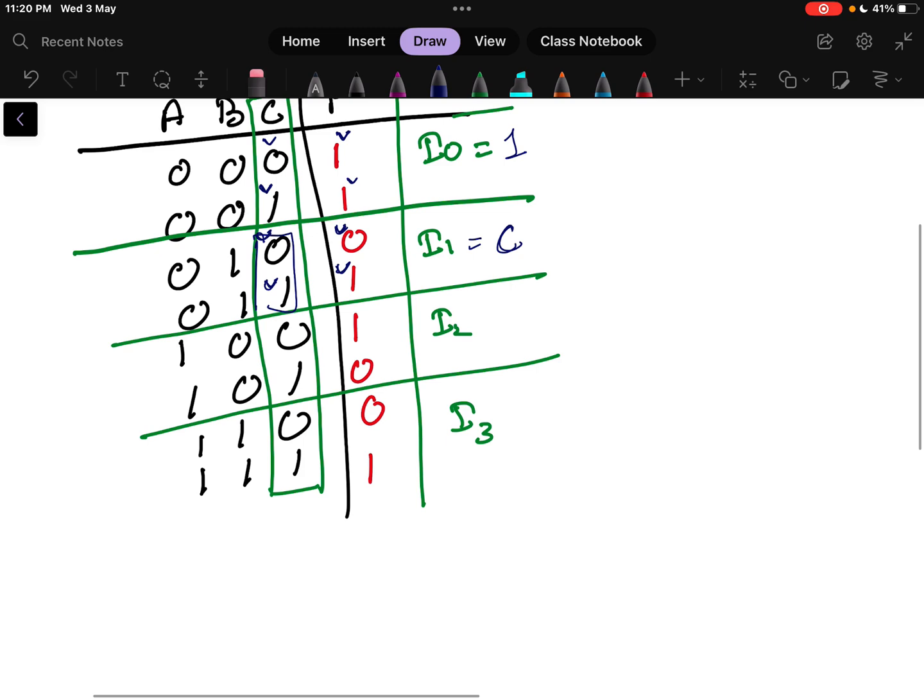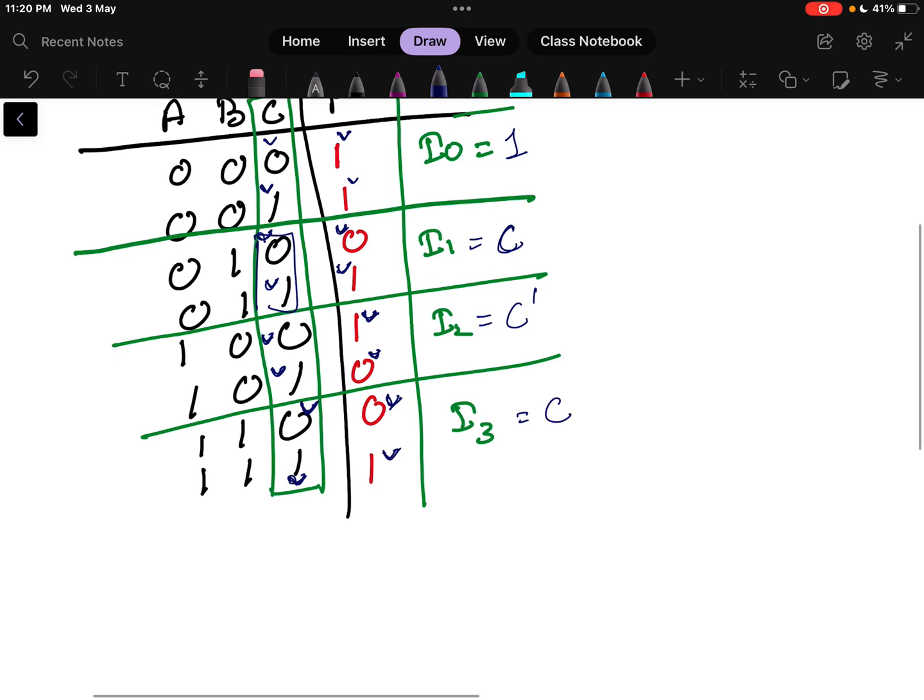I2 equals what? See here whenever C equals 0, my output is 1. Whenever C equals 1, my output equals 0. That means it is opposite of C, so I will write here C dash. What is the value of I3? This value is 0 and the output is 0. When C value equals 1, at that time the output equals 1 here. So I will write it is simple C.